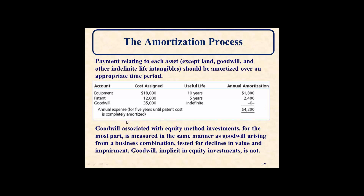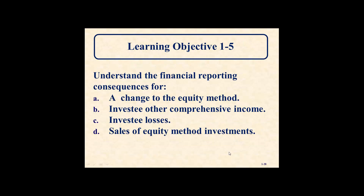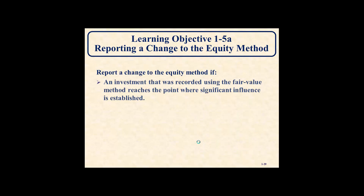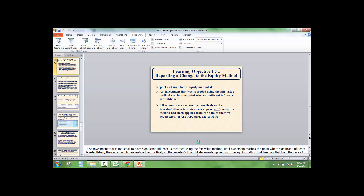Don't worry — we're going to do a bunch of these examples. Goodwill associated with equity method investments is measured similarly to goodwill arising from a business combination, and is tested for impairment rather than amortized. The next topics to cover include the financial reporting consequences of a change to an equity investment, investee other comprehensive income losses, and the sale of an equity method investment — but we'll stop here and review those changes after.